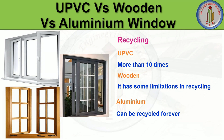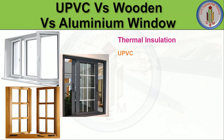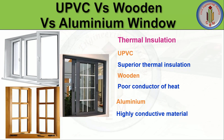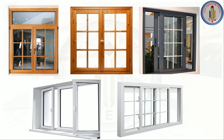For thermal insulation, uPVC windows have superior thermal insulation and are poor conductors of heat — better thermal insulators than aluminium. Wooden windows are also poor conductors of heat, but improper sealing will allow heat to pass inside the room. Aluminium windows are highly conductive material, so heat can pass through very easily.